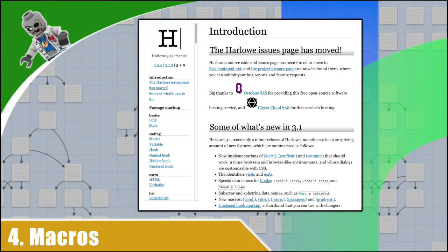The very first macro we'll be using is called the set macro. The set macro allows us to store data. This data can be anything: the player's name, the number of hit points, how many turns have elapsed — really any data you want. We do this by storing data in a variable. You can think of a variable as a safe deposit box. You put data inside it, and when you need that data, you refer to the safe deposit box.